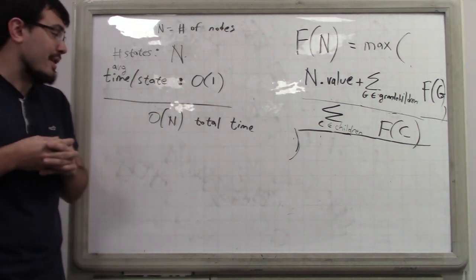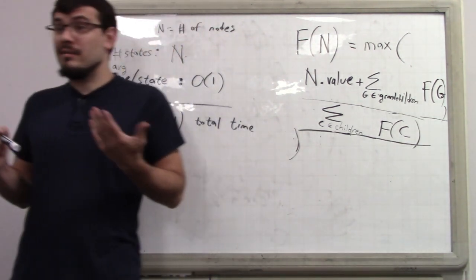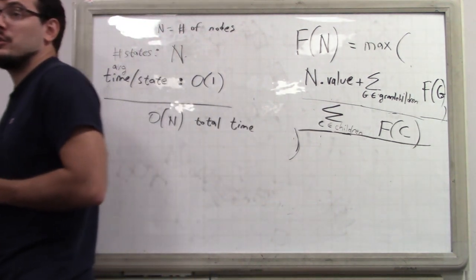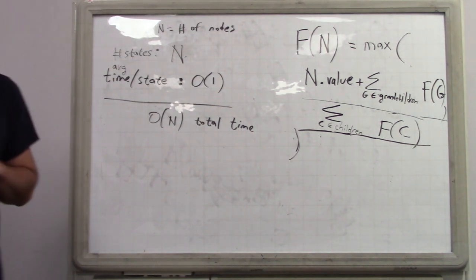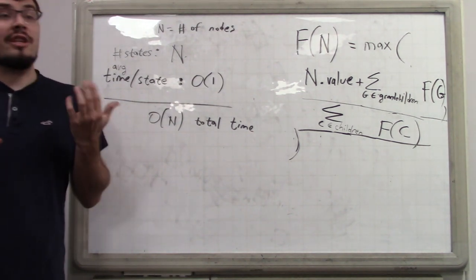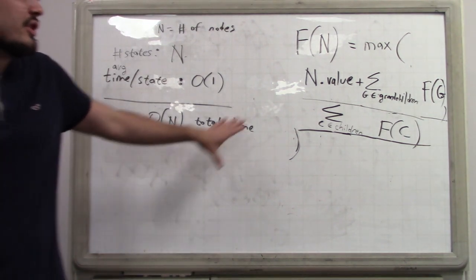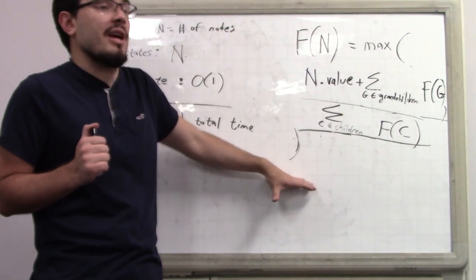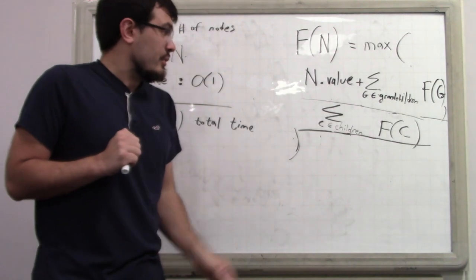With dynamic programming, you solve this problem in linear time. Without dynamic programming using naive recursion, this would be solved in basically exponential time because of the exponential blowup. You can also solve this problem bottom-up. The top-down solution just uses the recursion with a cache attached.